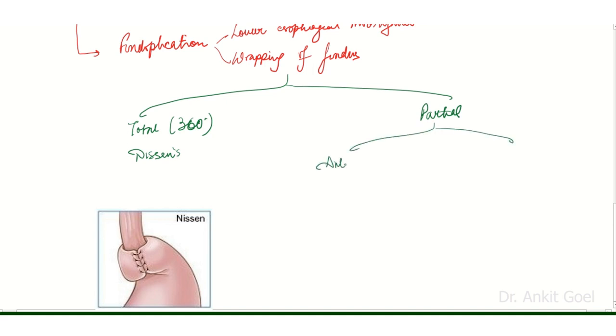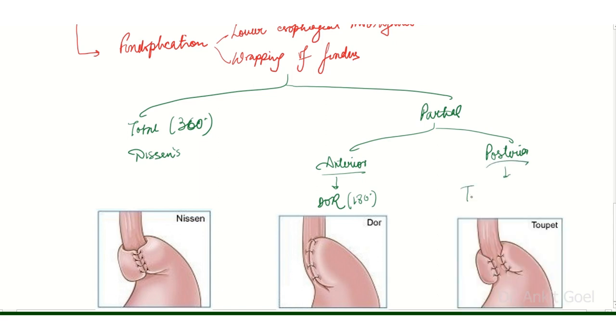Partial fundoplication can be anterior or posterior. Anterior 180-degree wrapping is the Dor fundoplication. As we can see in this image, posterior 270-degree wrapping is the Toupet fundoplication. Here is the image showing Toupet fundoplication.